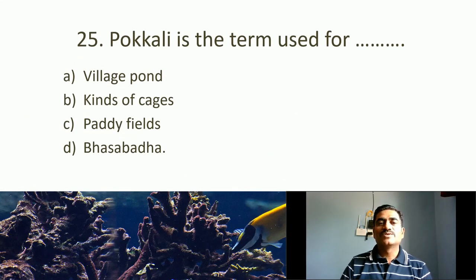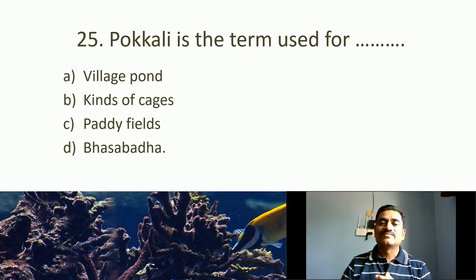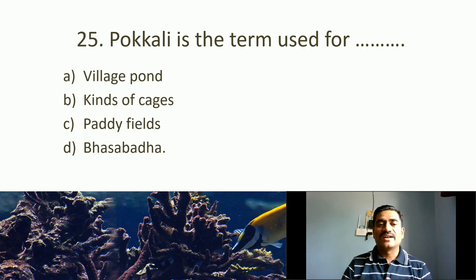Twenty-fifth MCQ: Pokali is a term used for what? Options: village pond, lakes, paddy fields, Masabandha. Pokali is a local name used in Kerala for paddy fields. Along with Pokali fields, fish culture can also be carried out. The correct answer is paddy fields.